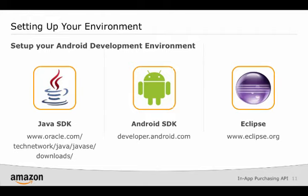Before you can start developing mobile apps for the Amazon App Store and Kindle Fire tablets, you must first set up your development environment. At a minimum, you need to install the Java Development Kit, the Android SDK, and Kindle Fire emulators. In this presentation, we'll be using Eclipse, an Open Source Integrated Development Environment or IDE. You can find more detailed information on Java, Android, and Eclipse at the links listed here.